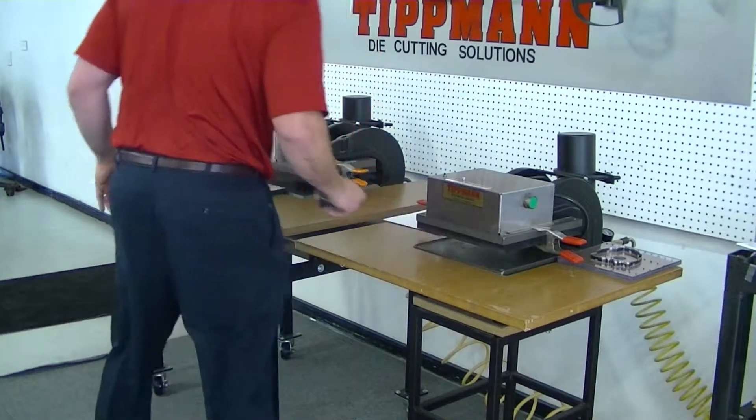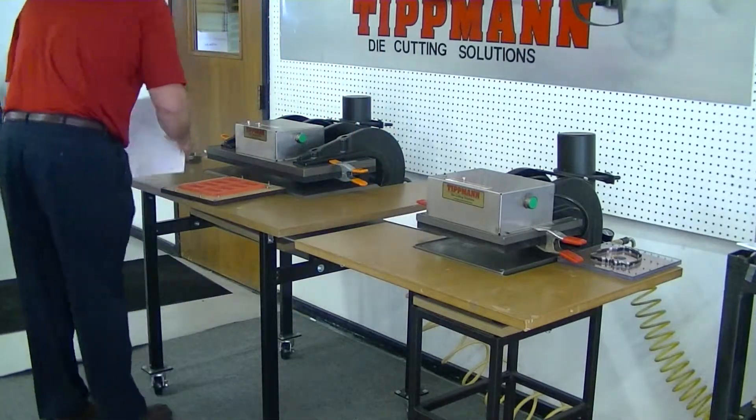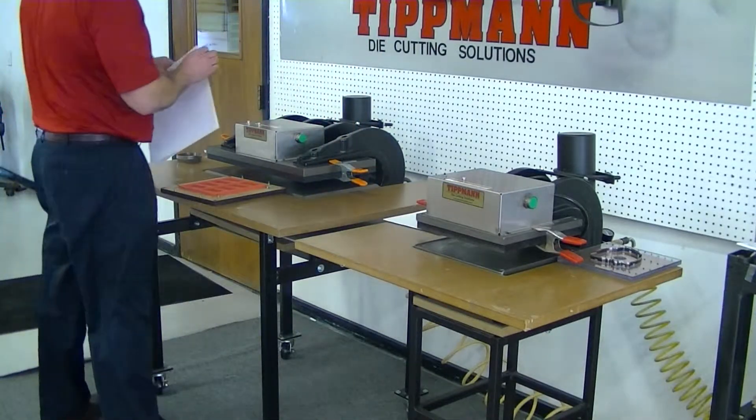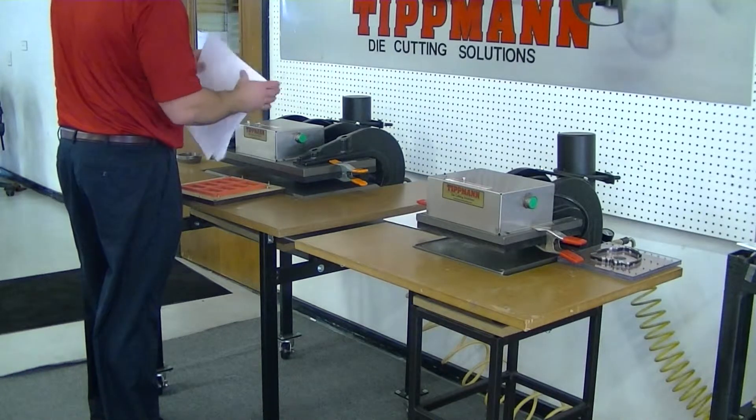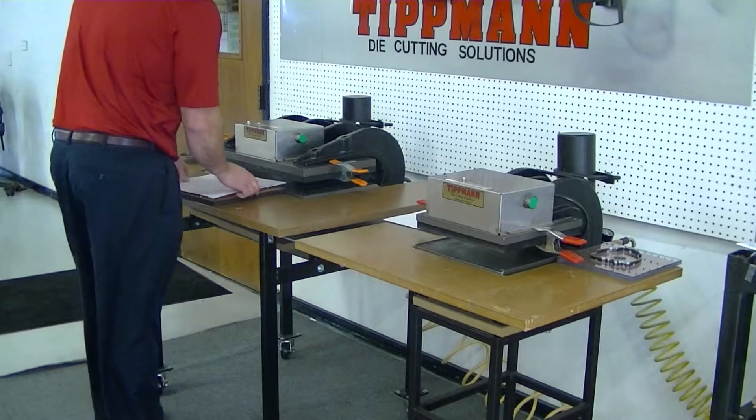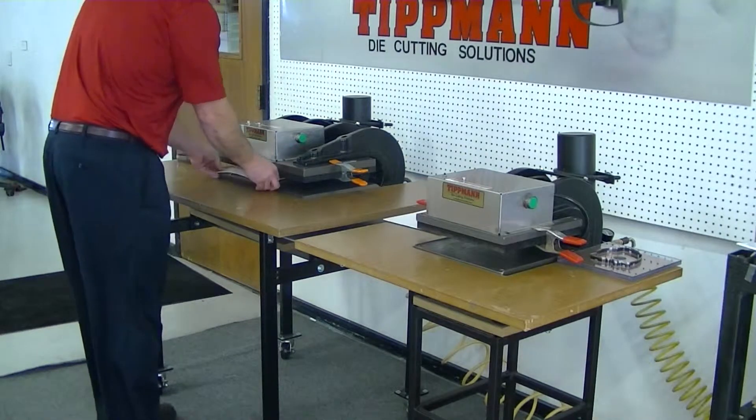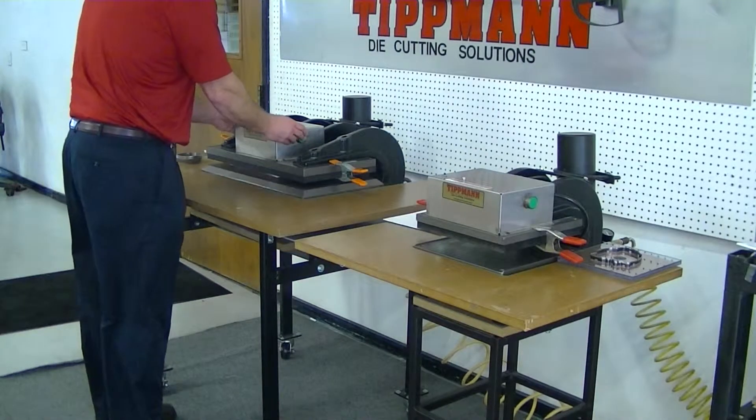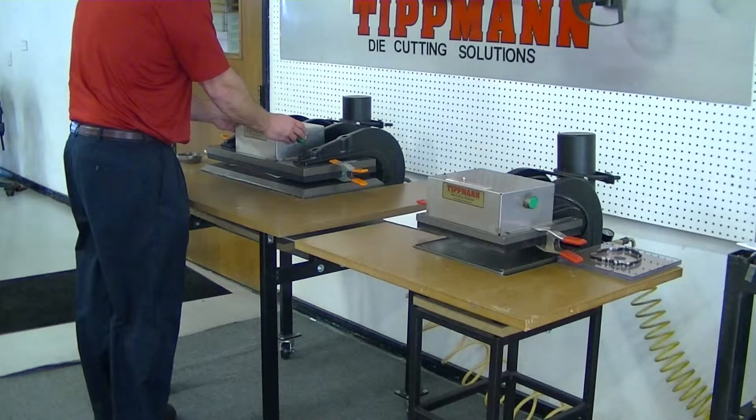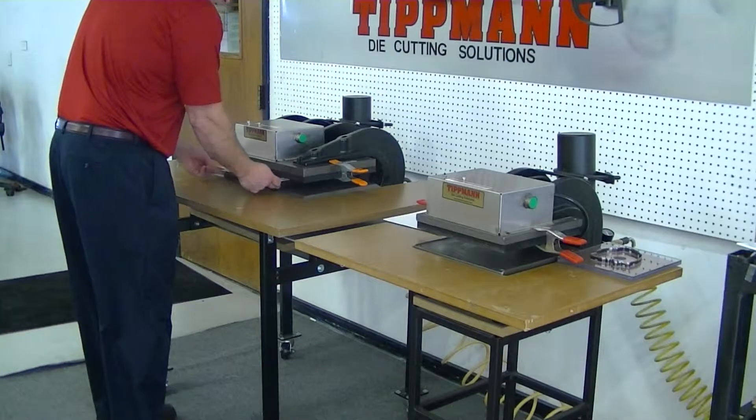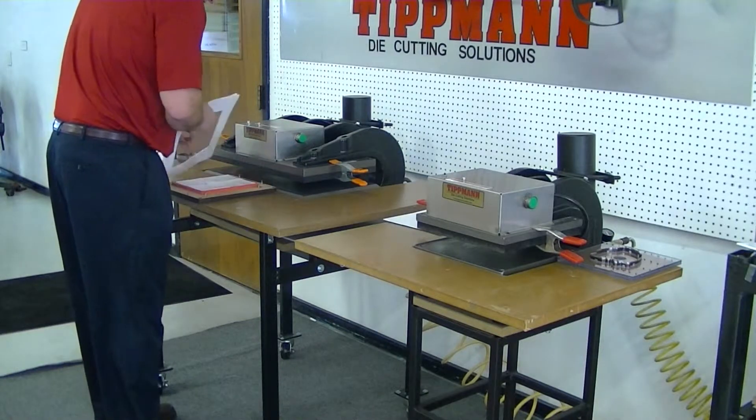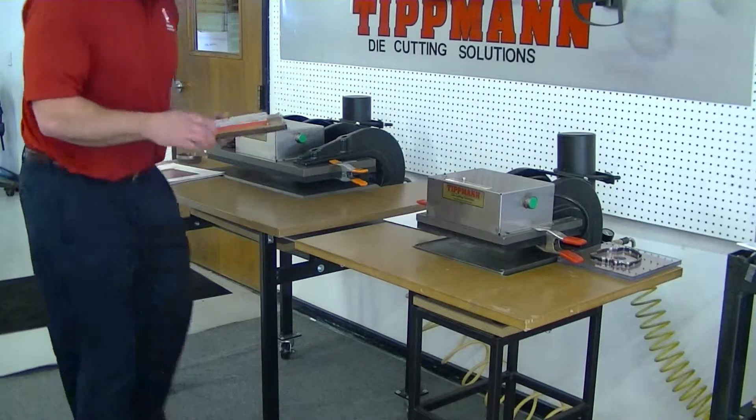Real quick, I'm going to show you the 1500 press cutting through would be four layers of the card stock. Slide it in. And click it out. Pull the die out and everything cut.